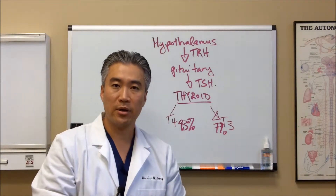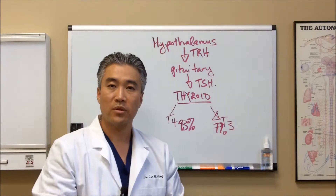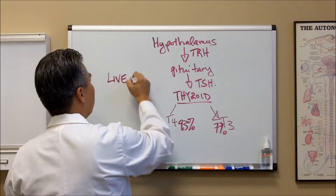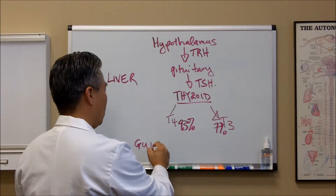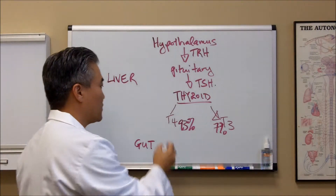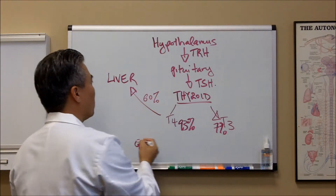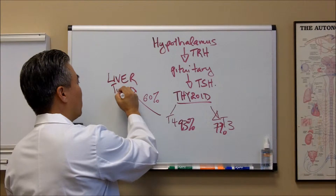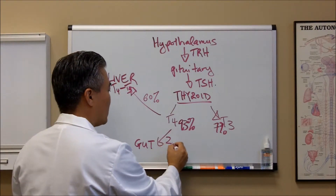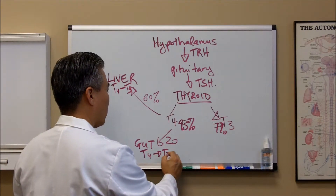There are two primary areas where T4 can be converted to T3. The first one is the liver, and the second one is the gut. About 60% of T4 will go to the liver and be converted to T3, and the other 20% will go to the gut, where T4 is also converted to T3.